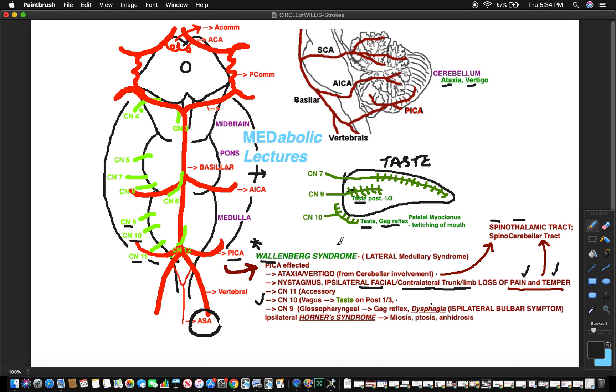Now we move on to cranial nerve 9. Cranial nerve 9 is right here - it involves the taste portion of the posterior one-third of the tongue. If you have infarction of cranial nerve 9, you're going to lose the taste back here too. It's the glossopharyngeal nerve, so the gag reflex is deficient too.